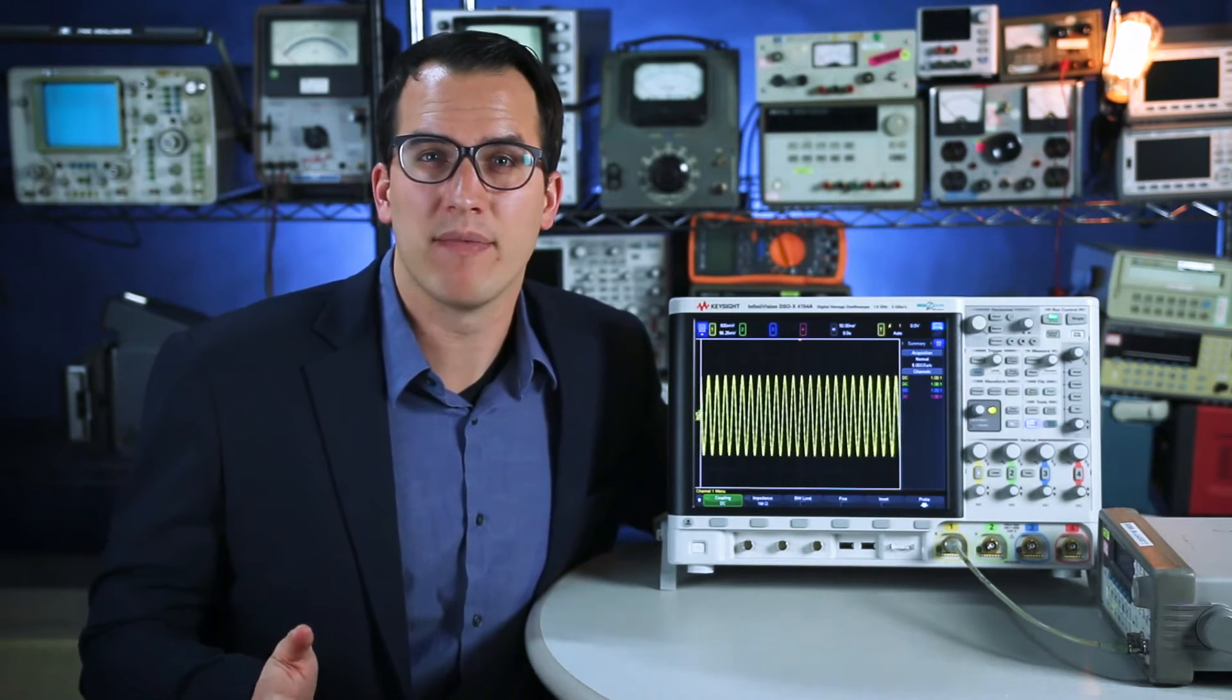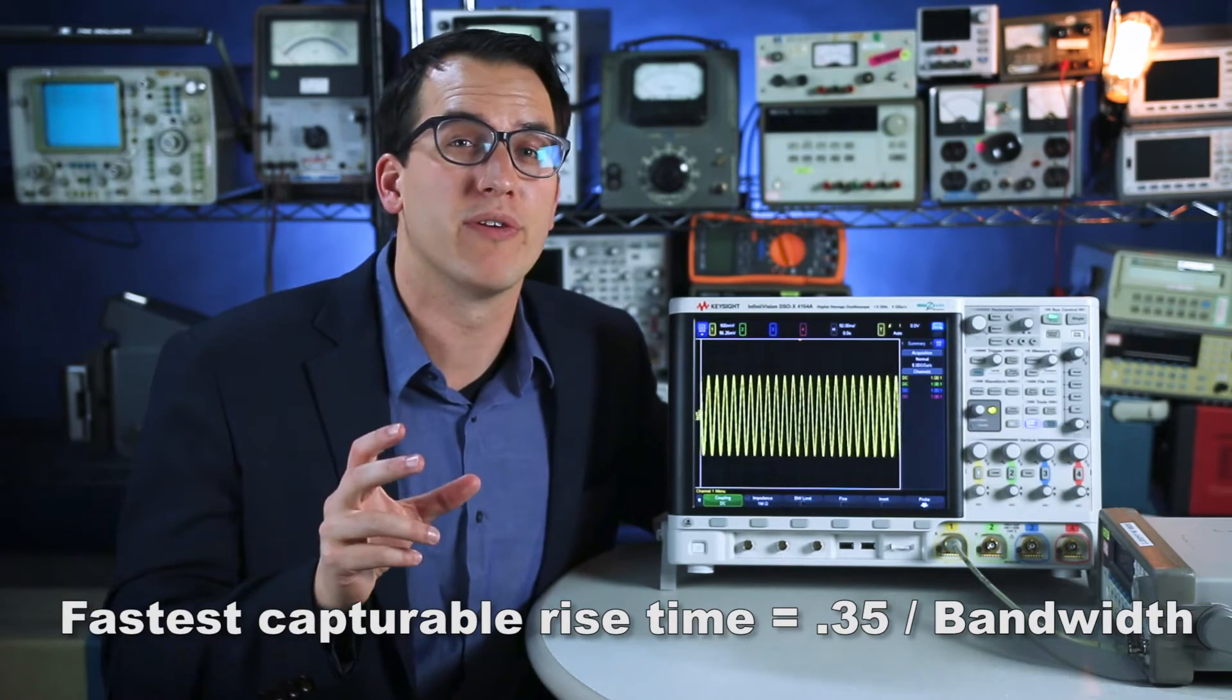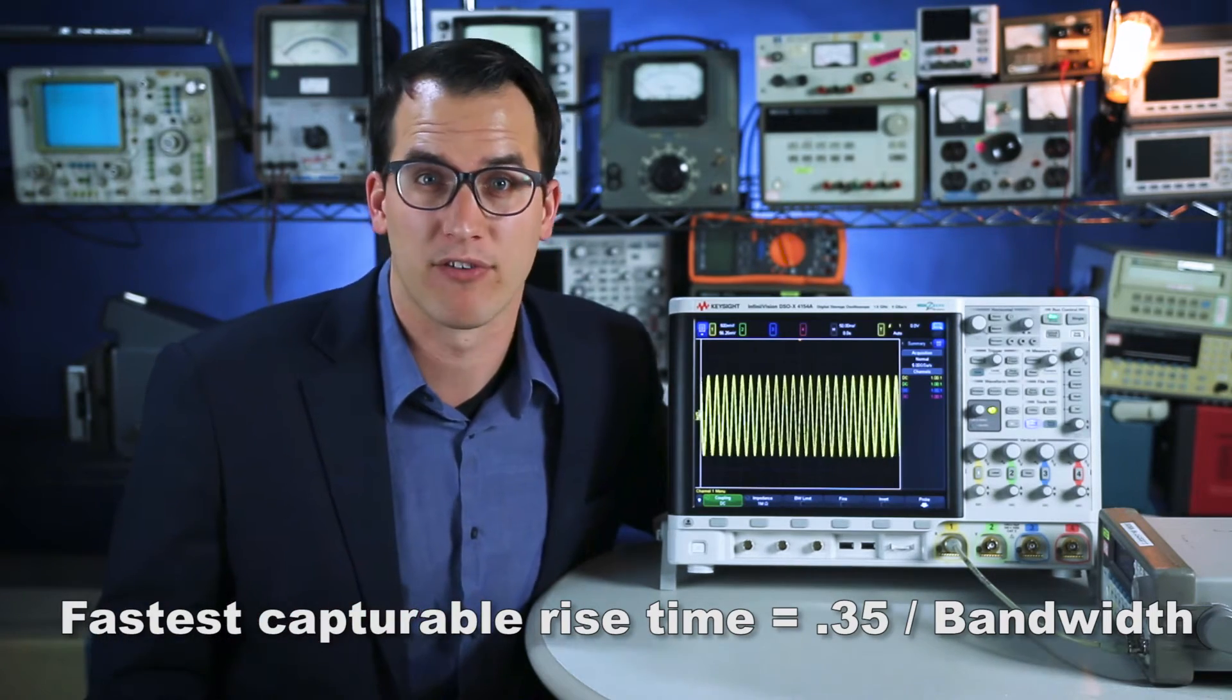To calculate the fastest rise time that your scope can see, divide 0.35 by the specified bandwidth of the scope.